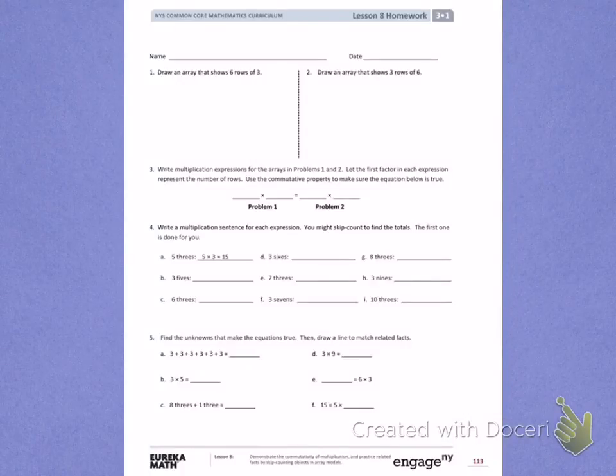This is Module 1, Lesson 8. Today's objective was to demonstrate the commutativity of multiplication and practice related facts by skip counting objects in array models.